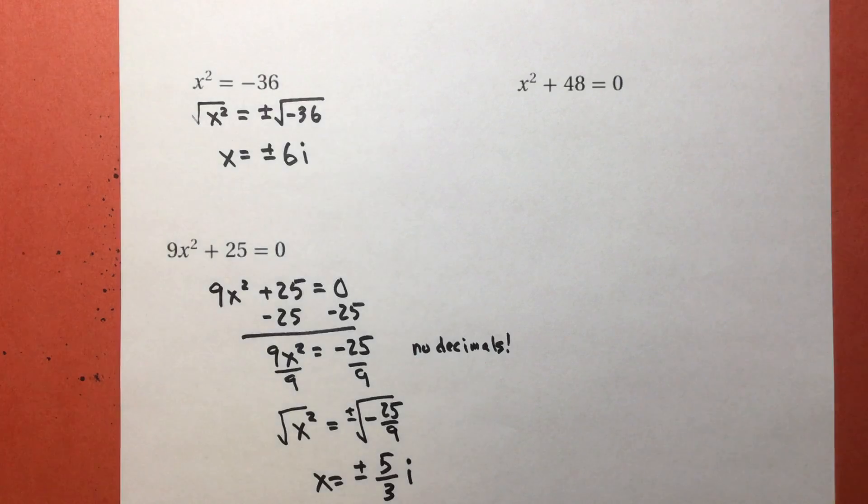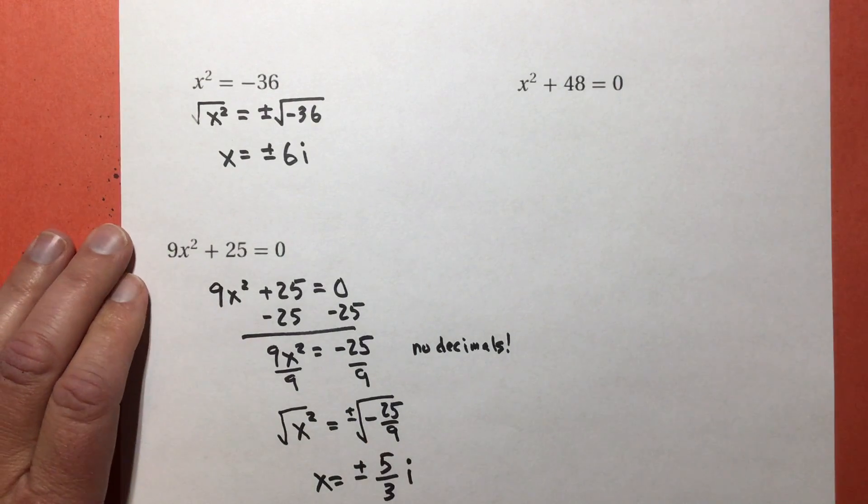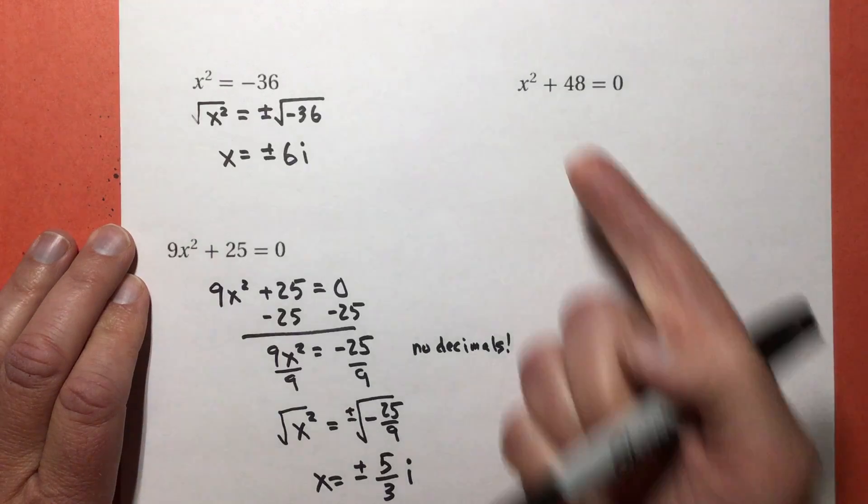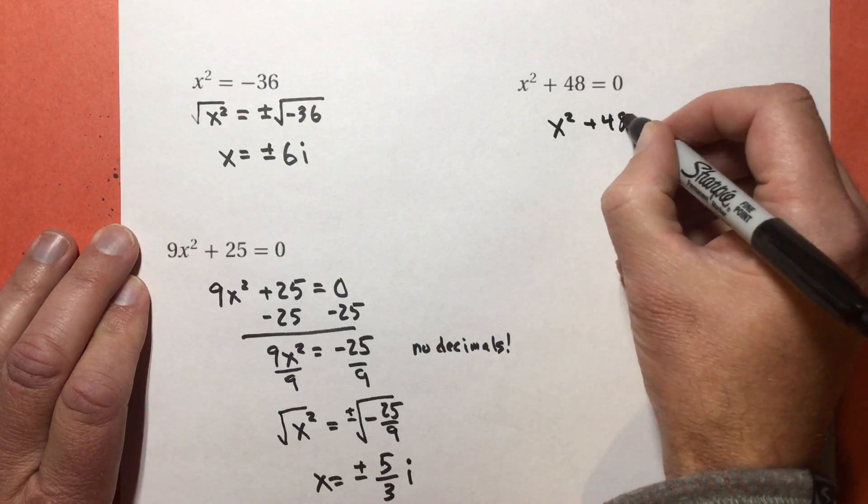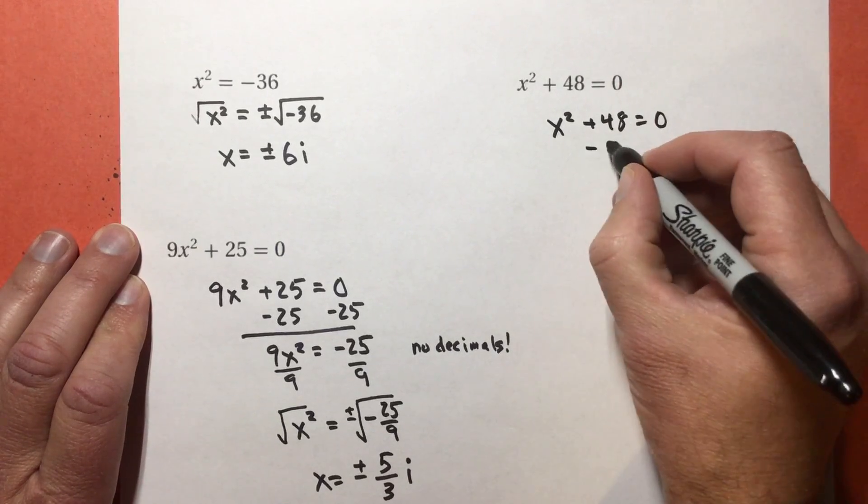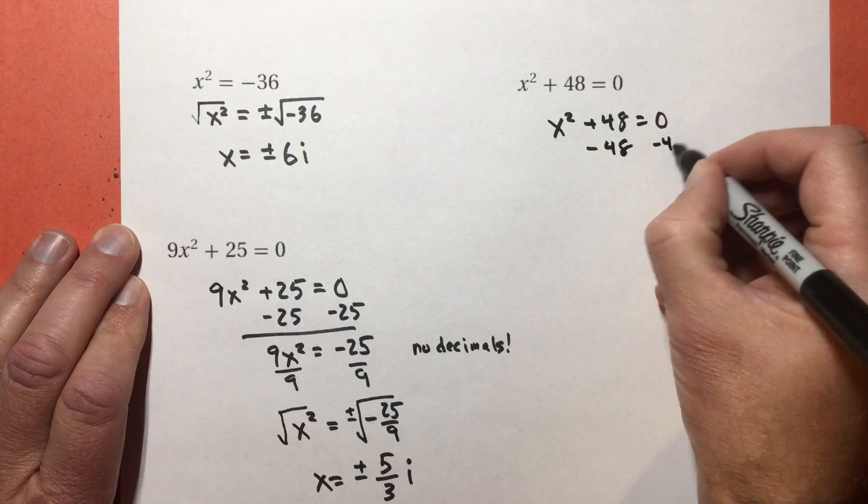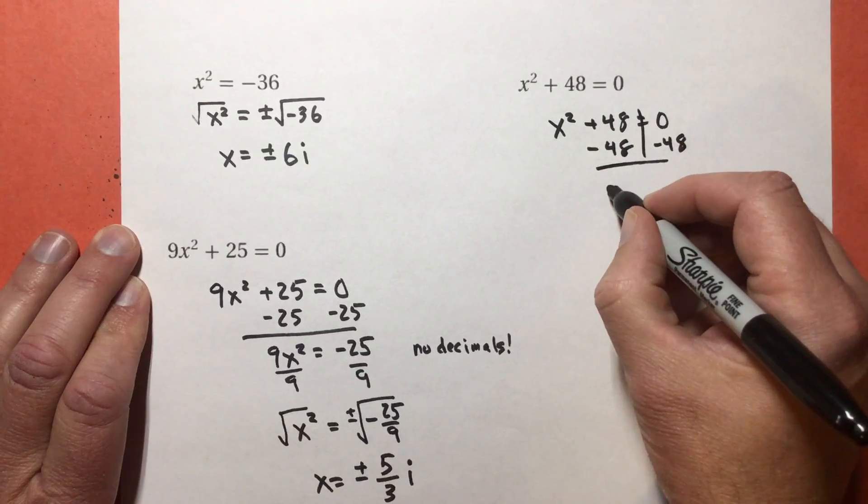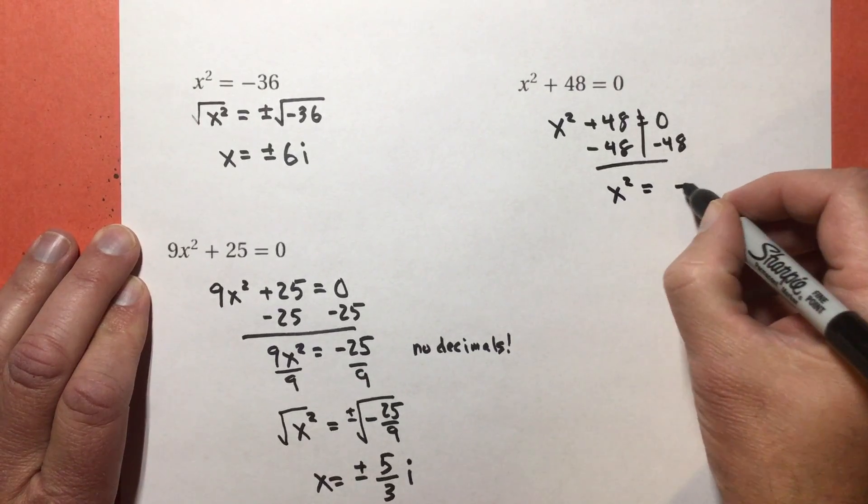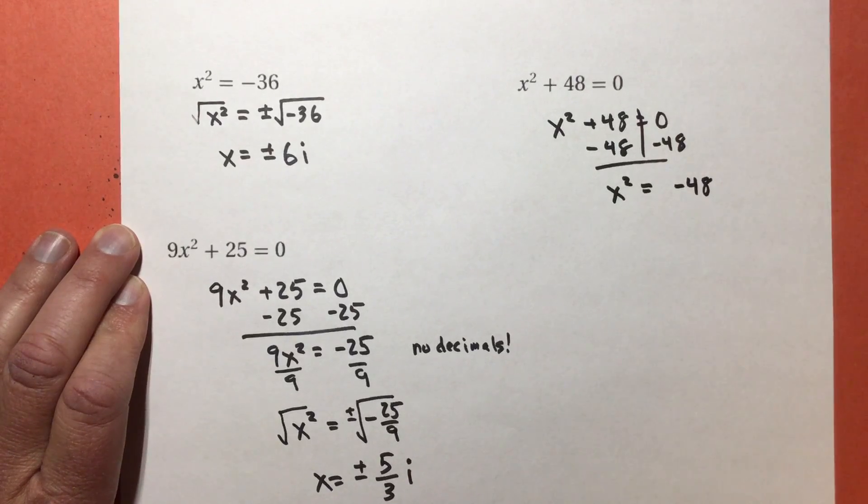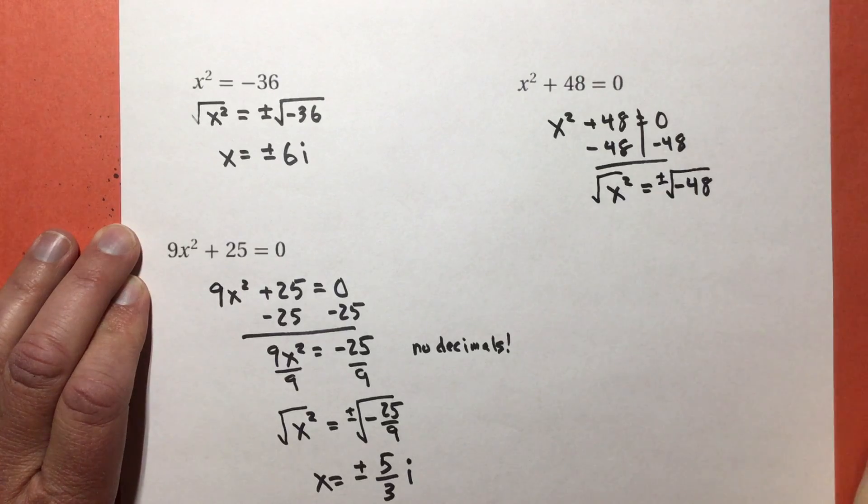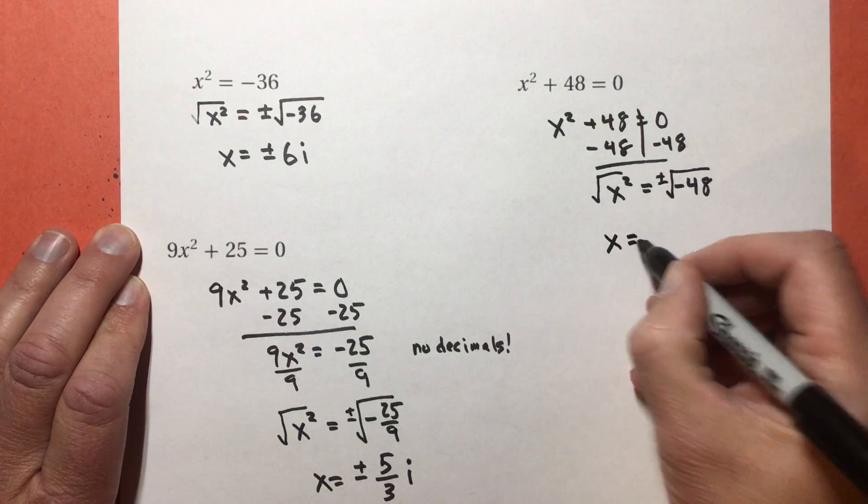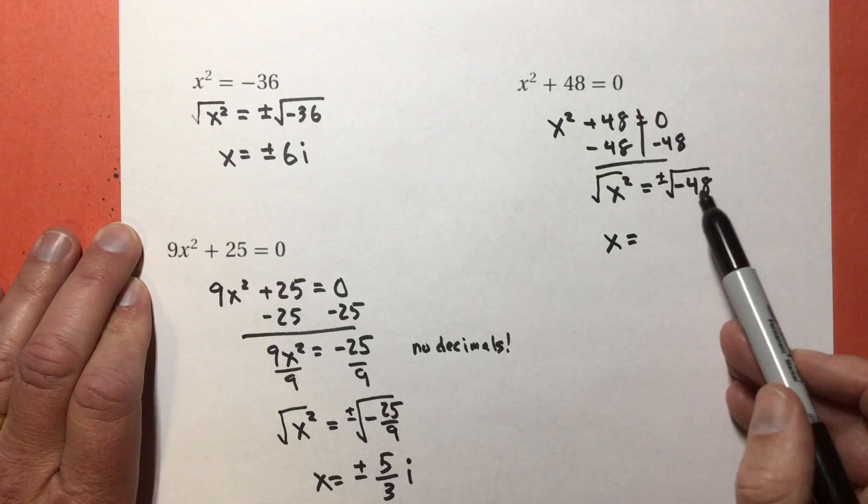So I had perfect squares on all the problems I've been working on. Even when it ended up as a fraction with perfect squares. So that was easy. What happens if I don't have a perfect square? So you got x² + 48 = 0. Add -48 to both sides. And I get x² = -48. I'm gonna take the square root. Don't forget to do the plus or minus. Now I'm gonna break this down.